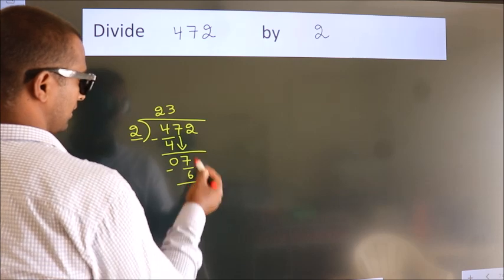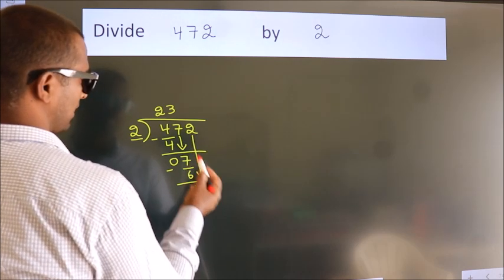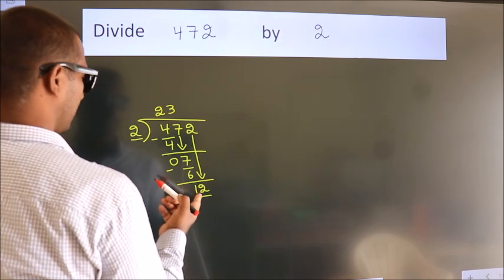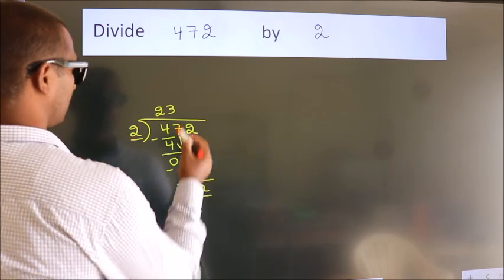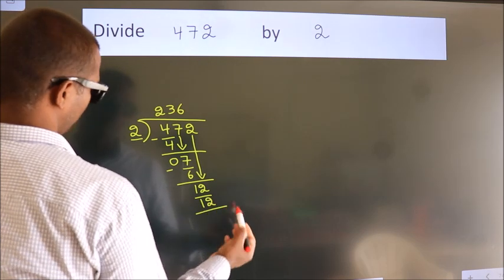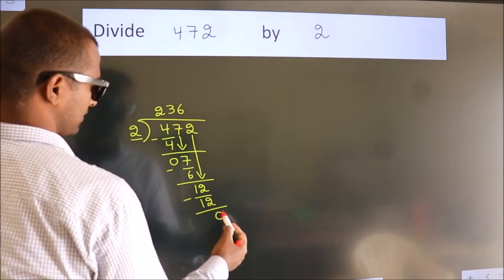After this, bring down the beside number. So 2 down. So 12. When do we get 12? In 2 table. 2 times 6, 12. Now we subtract. We get 0.